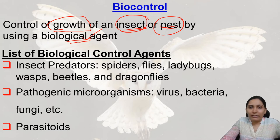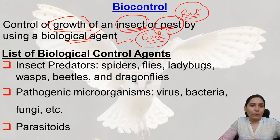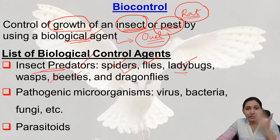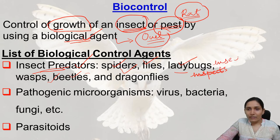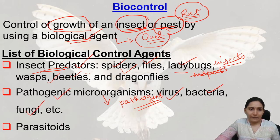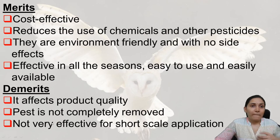In our example, the rat population is being controlled and the biological agent is the owl. As for the list of biological control agents, we have insect predators like spiders, flies, ladybugs, wasps, beetles, and dragonflies. We also have pathogenic microorganisms — pathogens like viruses, bacteria, and fungi. We also have parasitoids.